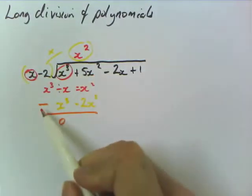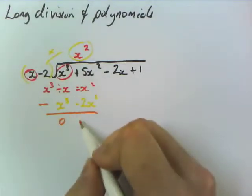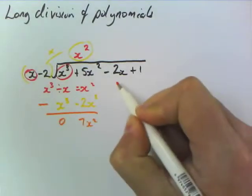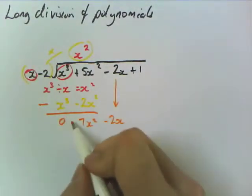So 5x squared minus negative 2x squared is 5x squared plus 2x squared, which is 7x squared. And then you bring down your next term. And now we repeat the process.